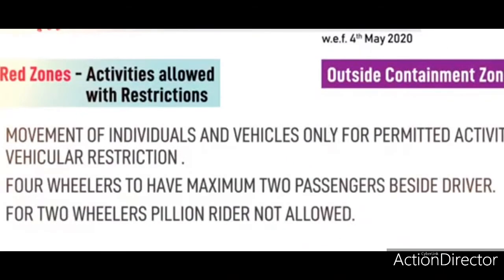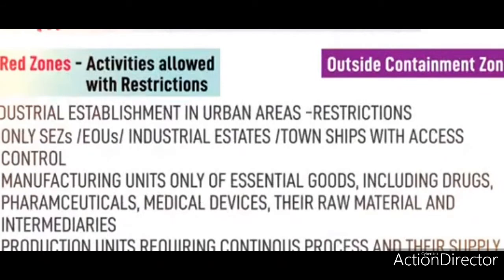In red zones, activities allowed but with restrictions — again, outside of containment zones — include movement of individuals and vehicles only for permitted activities. Vehicle restrictions apply: four-wheelers may carry a maximum of two passengers besides the driver, and for two-wheelers, pillion riders are not allowed.